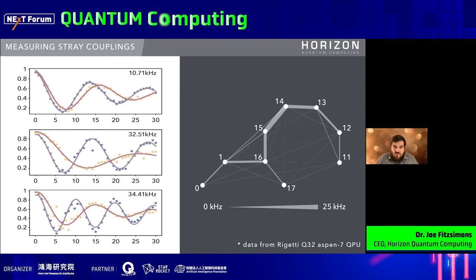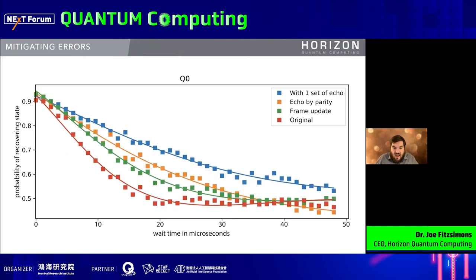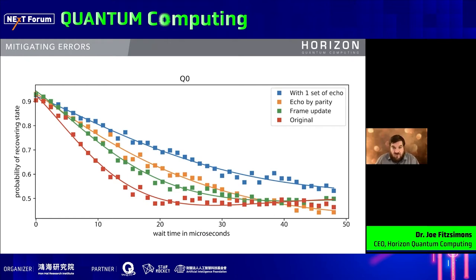This is an example from a Rigetti processor. In red is the decay of the qubit over time as initially characterized. If we take into account the couplings between qubits and update the qubit's frequency — so that instead of matching the frequency when all neighbors are in zero, we're in the middle of the binomial distribution when they're in superposition, as they would be in the middle of a computation — that leads to this green line, giving some improvement in qubit lifetime. If we then add active decoupling with echo pulses, we do better again.